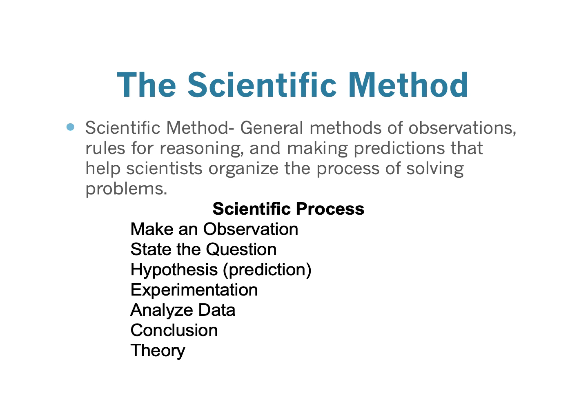If you pick up 20 different introductory science textbooks — chemistry, biology, geology, physics — somewhere at the beginning there's going to be a section on the scientific method, because that's how science is done. You'll often see a list of steps: make an observation, state the question, form a hypothesis which makes a prediction, do experiments to test the hypothesis, analyze your data, form a conclusion, and from that conclusion form a theory. Then you repeat as necessary.